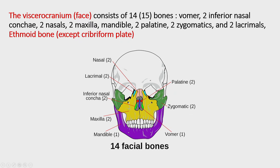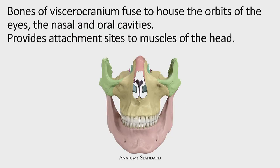The rest of the splanchnocranium bones are paired. The vomer and perpendicular plate of the ethmoidal bone form the bony nasal septum: the perpendicular plate forms the ventrocranial part, and the vomer forms the dorsal caudal part. The viscerocranium is important because it houses the orbits and eyes, forms the nasal and oral cavities, and provides attachment for muscles of the head region — mainly two groups: masticatory muscles and mimic muscles.